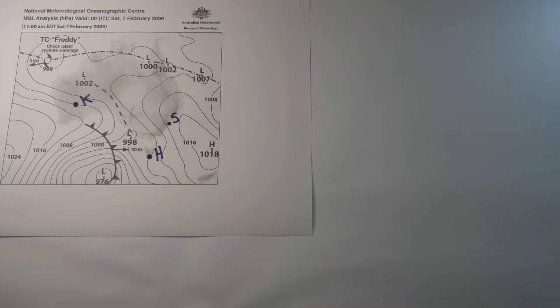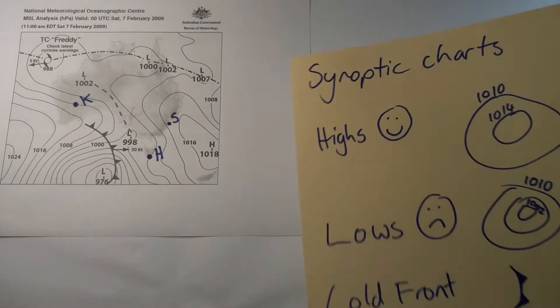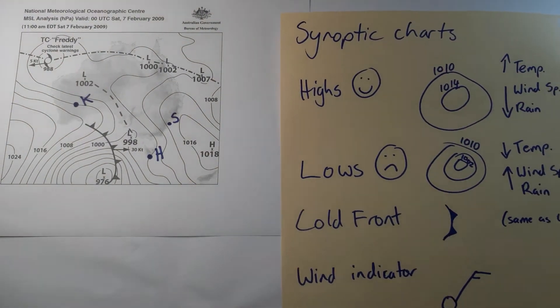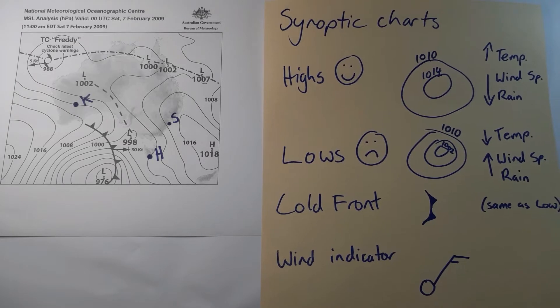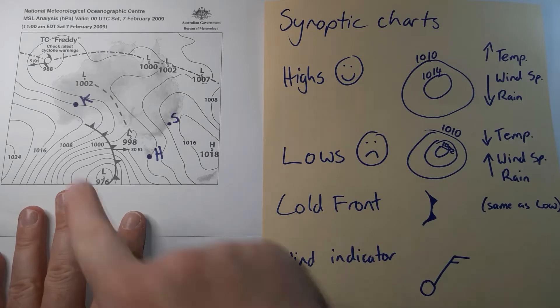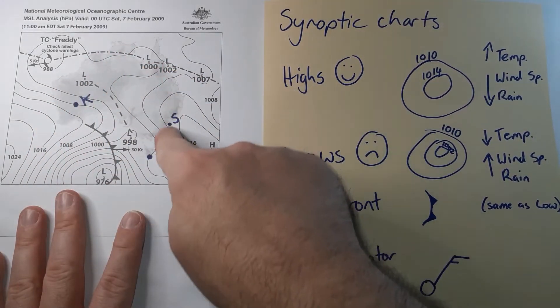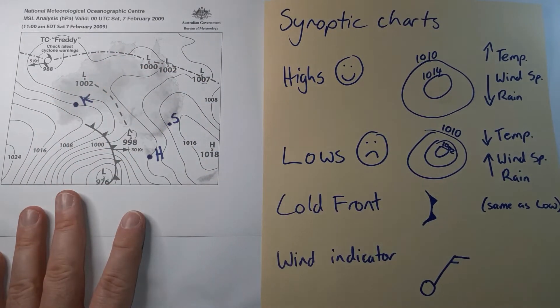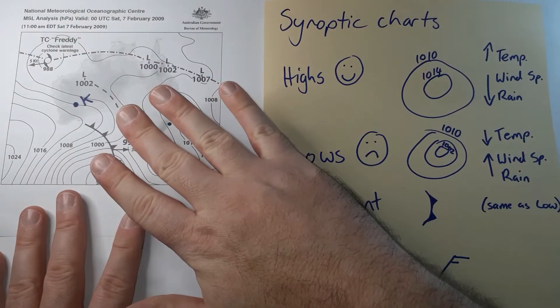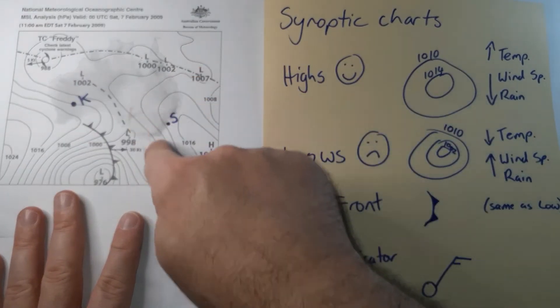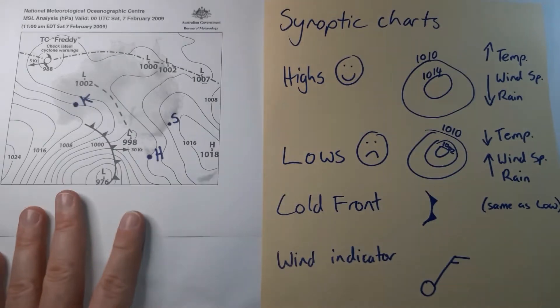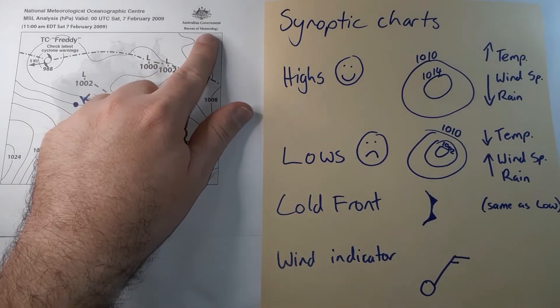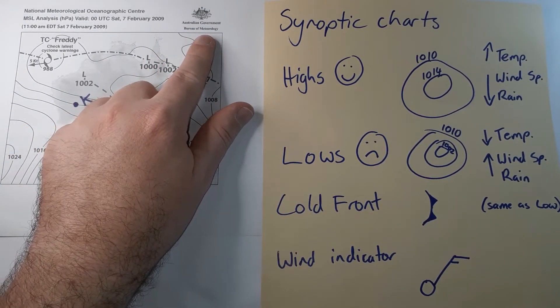We are going to try and do the world's quickest synoptic chart overview. A synoptic chart basically gives us a summary of what's happening in the atmosphere above a particular location. On my sample here, I've got a base map of Australia, and over the top, someone's gone and drawn all these squiggly lines. That was the Bureau of Meteorology, and that's the source of this synoptic chart.